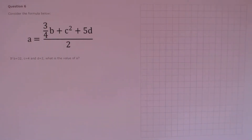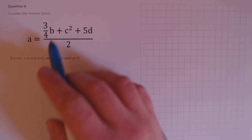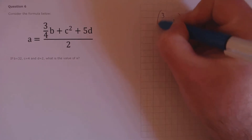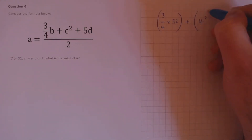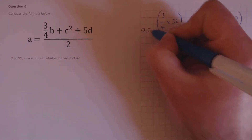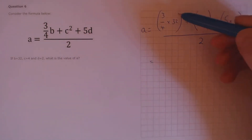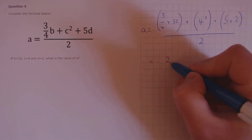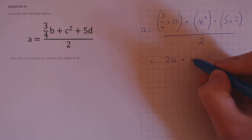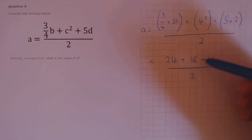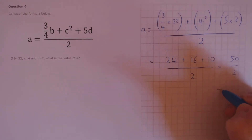Question 6. Consider the formula below. If b is 32, c is 4, and d is 2, what is the value of a? We substitute these into the formula: a equals three-quarters times 32, plus 4 squared, plus 5 times 2, all over 2. Let's deal with the top of the fraction first. Three-quarters of 32: a quarter of 32 is 8, so three-quarters is 24. Plus 4 squared, that's 4 times 4 which is 16, plus 5 times 2, that's 10, all over 2. Adding those up gives us 50 over 2, which simply equals 25.